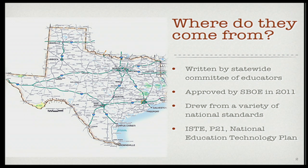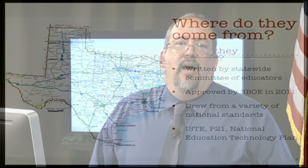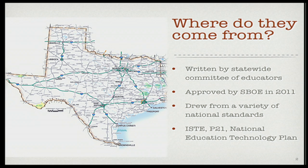The new TEKS, after being in place for 14 years, were rewritten by a state committee of educators from across the state — not just people at TEA, but educators and policymakers who came together just like they would for any TEK rewrite. They were approved at the end of 2011 by the State Board of Education. They drew from a variety of national and state standards like the ISTE standards, the P21 standards, and also from something called the National Education Technology Plan.